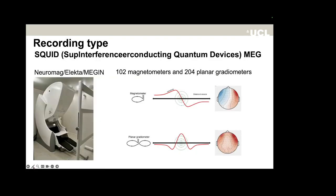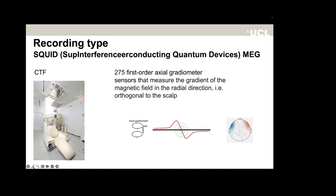The sensors inside an MEG system can be of two types: magnetometers or gradiometers, with gradiometers further divided into axial or planar types. For example, the Neuromag system has 102 magnetometers and 204 planar gradiometers. Magnetometers provide the best signal and are more sensitive to deep brain sources, but also more sensitive to competing magnetic noise. Gradiometers are much better at noise reduction. It is important to know which sensor type you are using when interpreting spatial topographies, as axial gradiometers, planar gradiometers, and magnetometers give slightly different topographies.